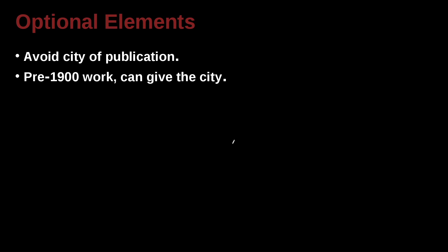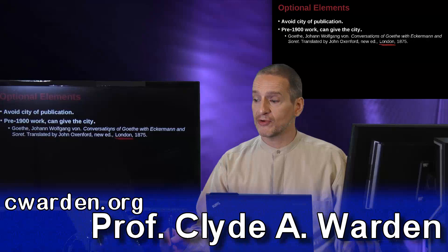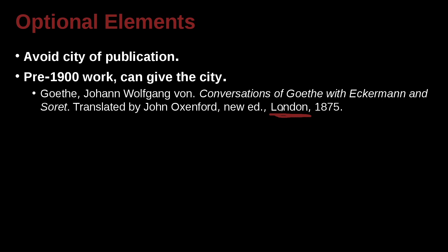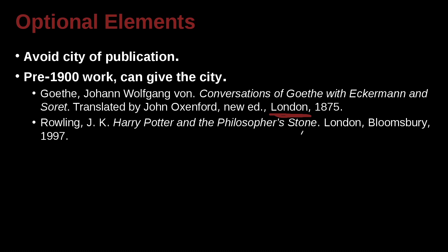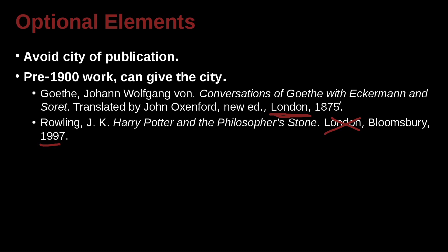What about extra or optional information? One optional piece is the city of publication. The MLA used to normally include city of publication, but now they discourage that. Sometimes if you have older published works — that is, before 1900 — then you can include the city, because the publishers may be difficult to find. However, for a book like J.K. Rowling's Harry Potter and the Philosopher's Stone, published in 1997, you really do not need to include London. MLA's new guidelines say only books that are really old — over 100 years, pre-1900 — would you include that.